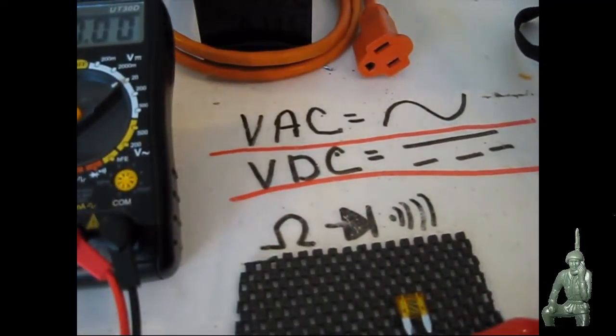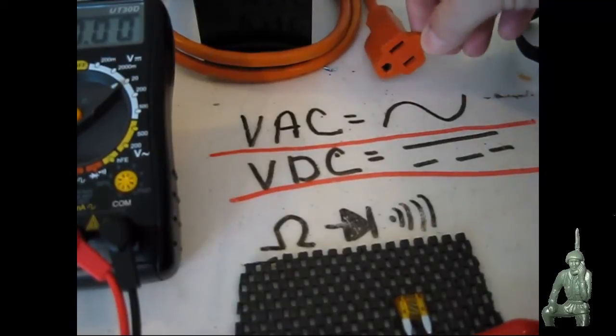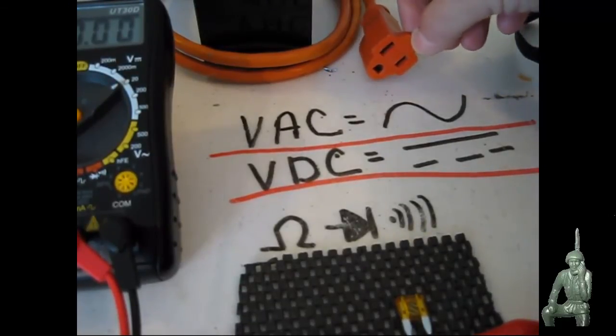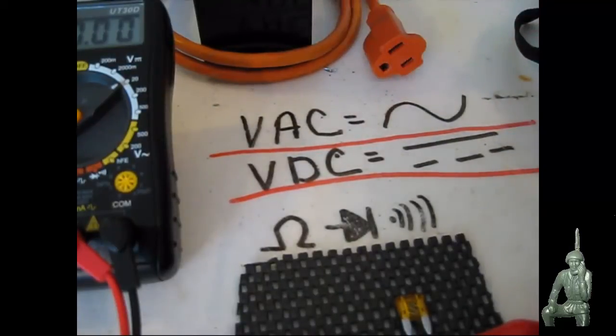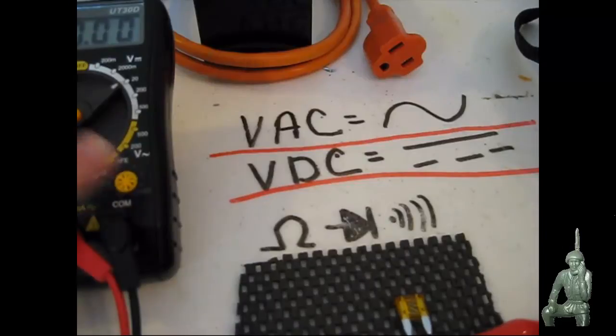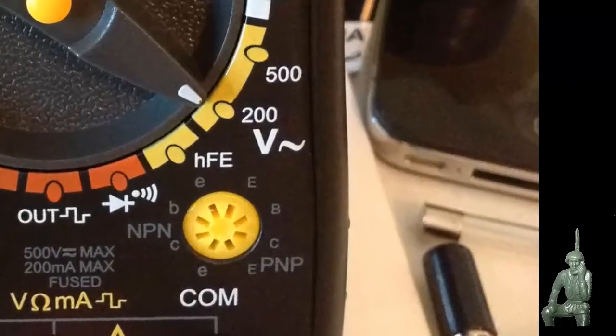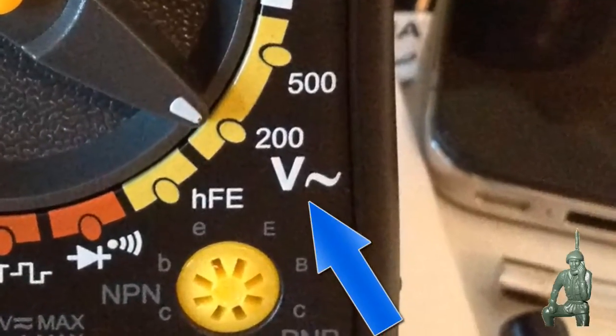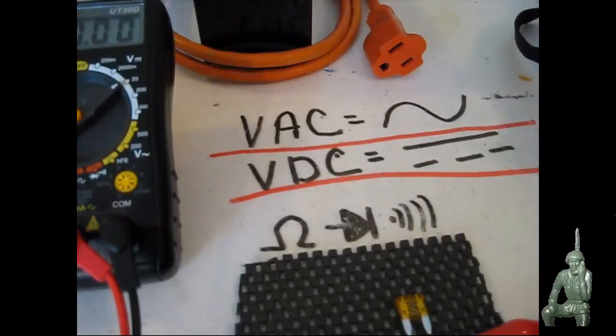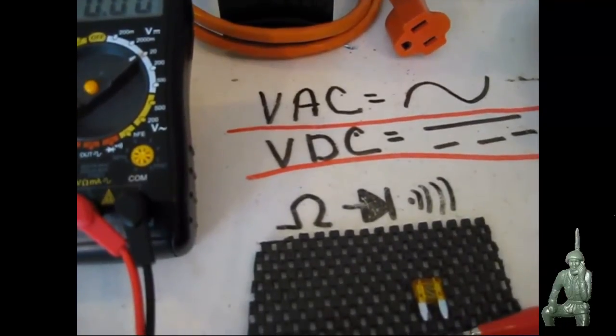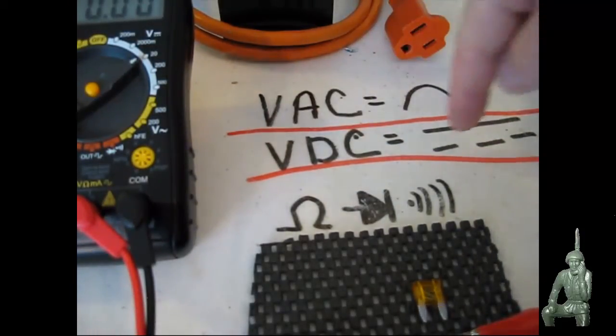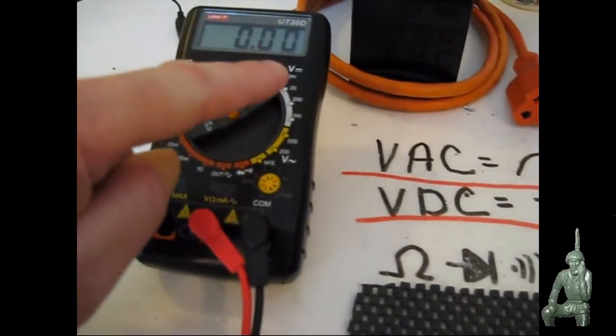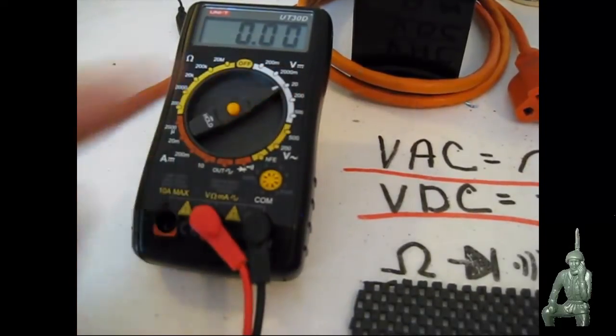The first one would be how to check for AC voltage. That would be the voltage here coming out of your wall, volts AC or volts alternating current. Typically that's indicated on the meter over here with a little sine wave. And if you look at the meter, it's kind of blurry. I'll throw some screenshots in so you can see that there.